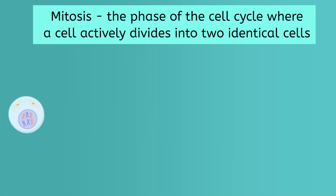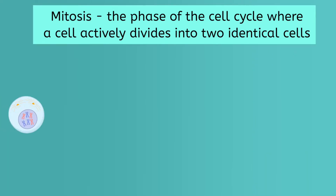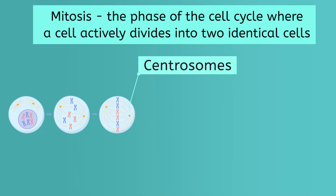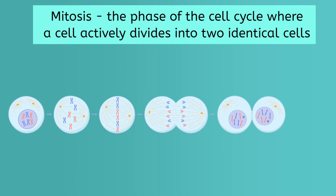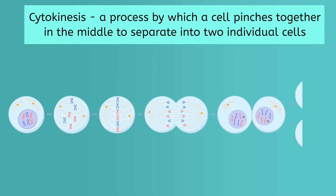In this process, the nuclear envelope, or protective barrier surrounding the nucleus, dissolves, and the cell's two identical sets of DNA are lined up in the middle of the cell by specialized organelles called centrosomes. The centrosomes then pull the two sets of DNA to opposite sides of the cell. Once there is an identical set of DNA on each side, two nuclear envelopes form around them, creating two identical nuclei. Finally, in a process called cytokinesis, the cell pinches together in the middle to separate into two individual cells.